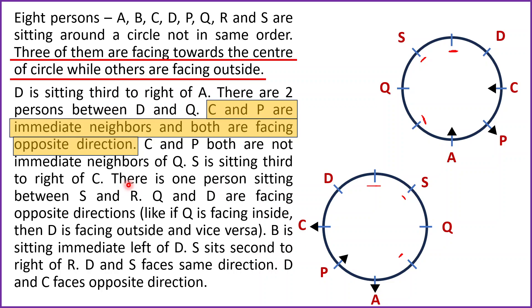There is one person sitting between S and R. So we will place R here because between S and R there is only one person — R is placed here in Case 1. In Case 2, between S and R one person is there, so we will place R here at this position in Case 2.